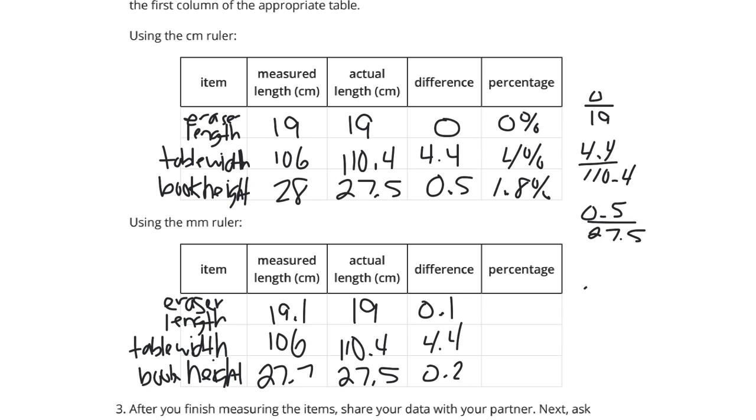Continuing on here, 0.1 divided by 19 is half a percent, 0.5 of a percent. We already calculated the 4.4 divided by 110.4 above, still going to be 4%. And then, the 0.2 difference, or error, divided by the actual 27.5, is going to get us 0.7 of a percent.